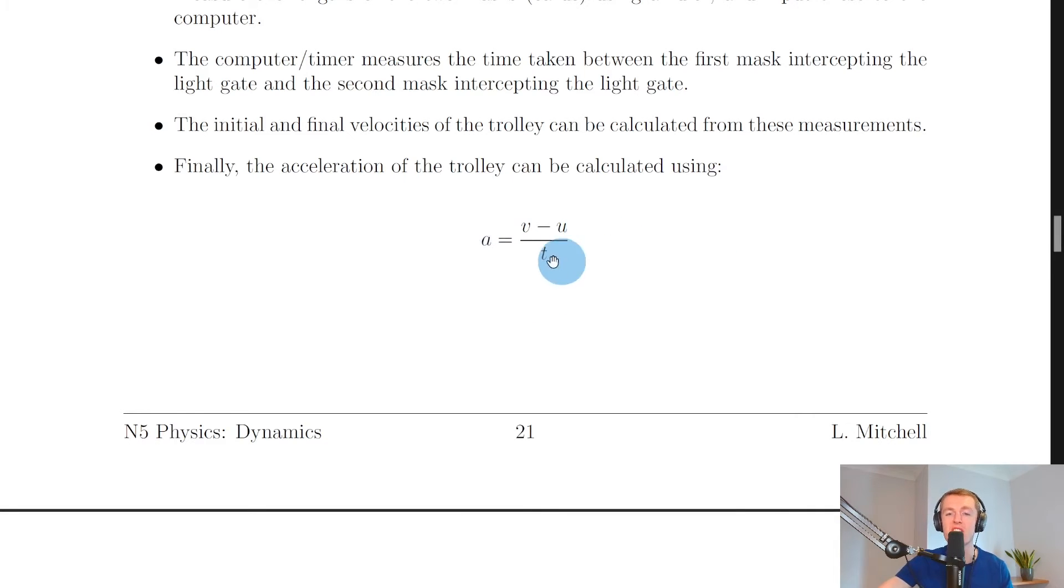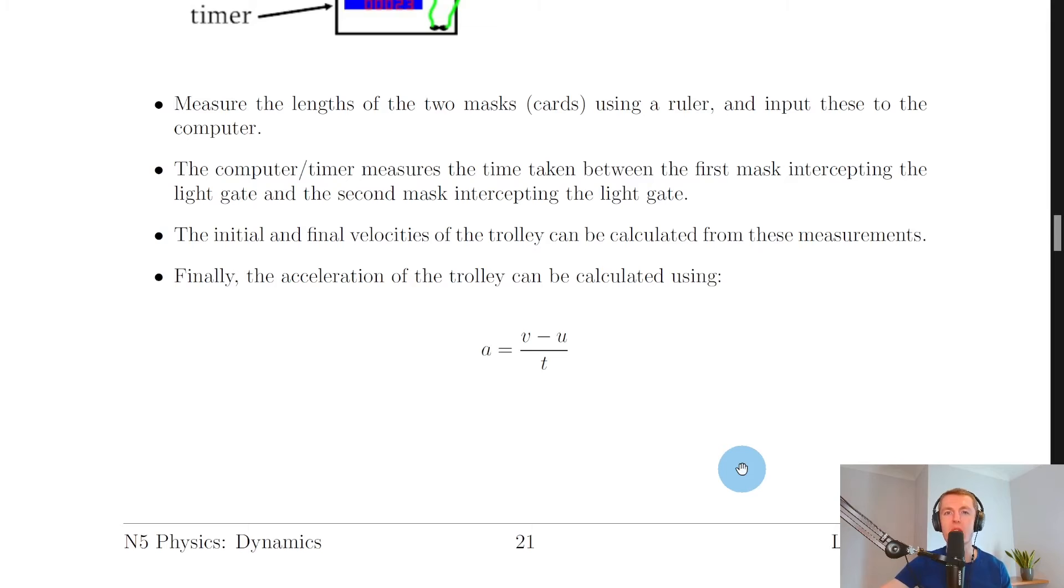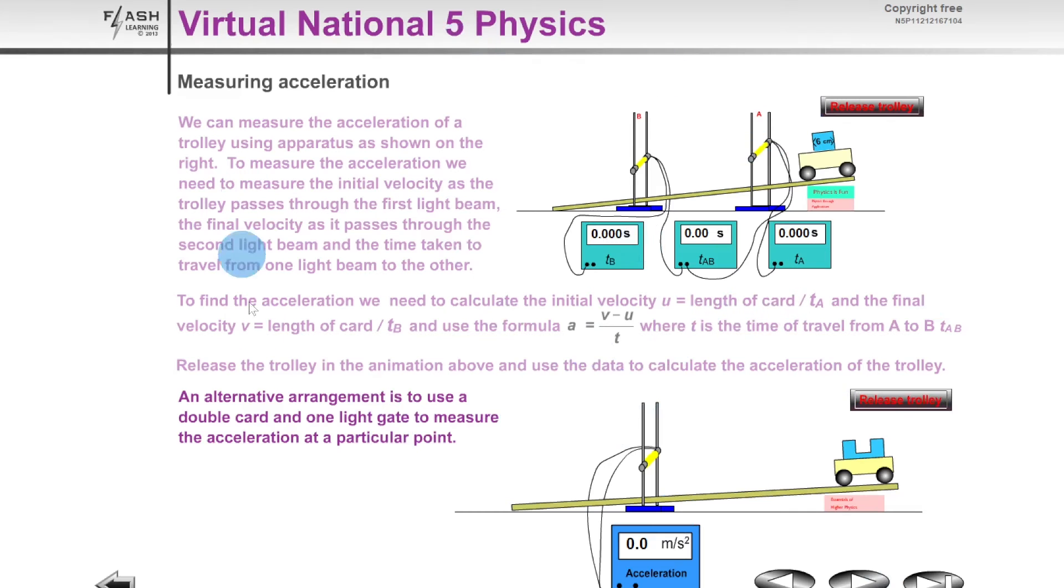Now I'll just show you a quick simulation to help you visualize this setup. So if you ignore most of this page, we're just interested in this picture down the bottom which shows a single light gate connected to a TSA timer. We've then got a double mask on a trolley which is on a ramp which is propped up by some books, just like the setup and the notes that we just looked at.